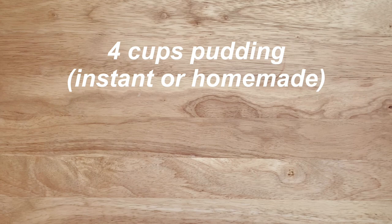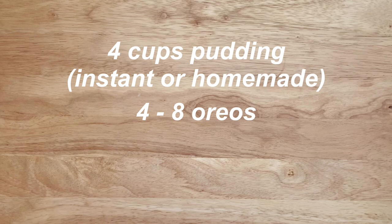For two servings, you'll need four cups of pudding. I'm using the instant kind, which is already measured, four to eight Oreos, and a few gummy worms.